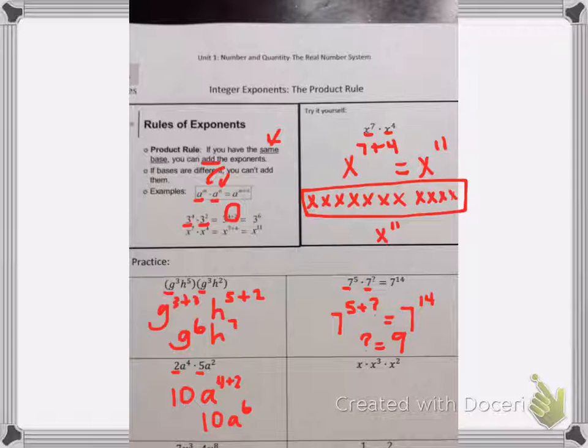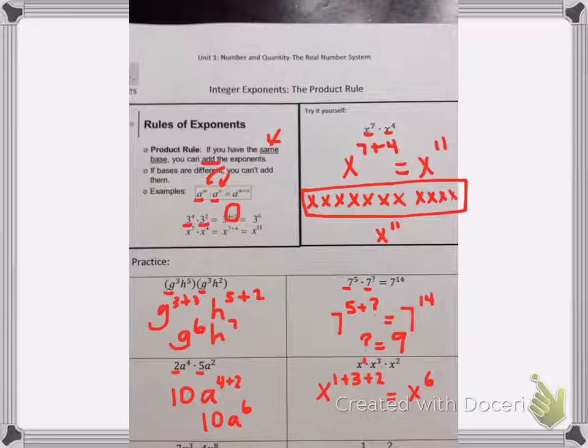Our next example over here has x times x cubed times x squared. The power that's on the x right here, it's not shown there, but it's the power of one. We know that because there's one x there. So this would be the power of x to the one plus three plus two. So my answer to this problem is x to the sixth power.